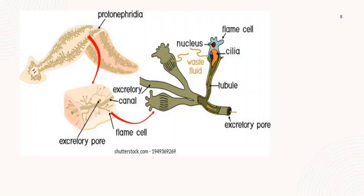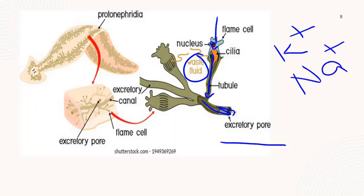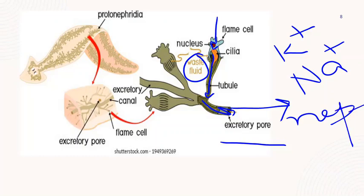The protonephridia are present on the surface of the animal body. The excretory canal ends in a blunt flame cell. Interstitial fluid or waste fluid surrounds the flame cells. The interstitial fluid moves into the flame cell, and cilia present in the flame cell move the fluid down to the excretory pore. Similar to our kidneys, vital nutrients such as potassium and sodium are retained, and waste is removed through the excretory pore.